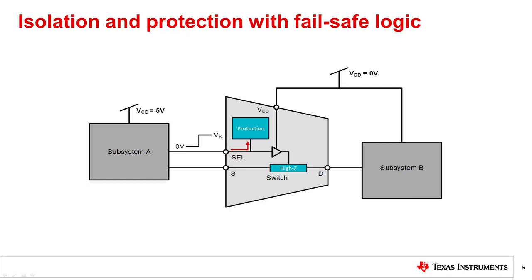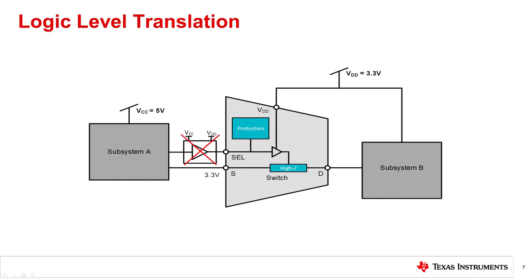This feature can be found in all TMux devices. The fail-safe logic feature also eliminates the need for a voltage translator if different voltages are used within the design. For example, subsystem A powered with 5 volts can control a multiplexer powered with 3.3 volts. The signal levels still need to comply with the switch ratings.